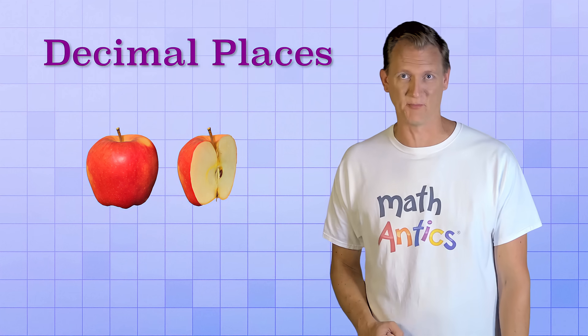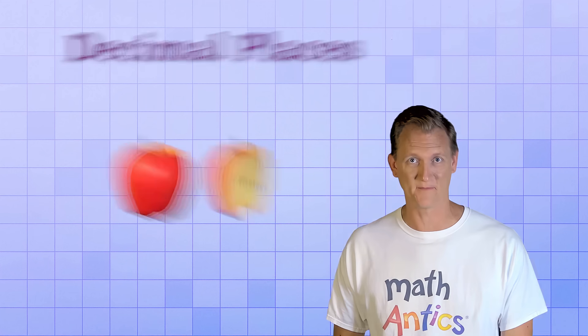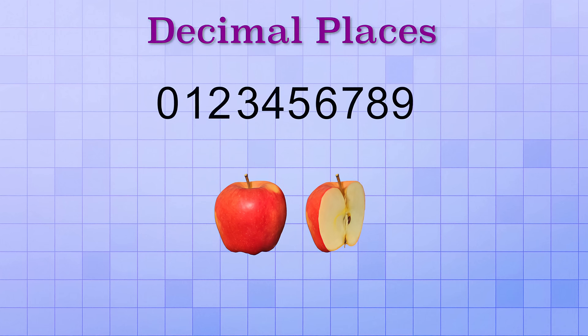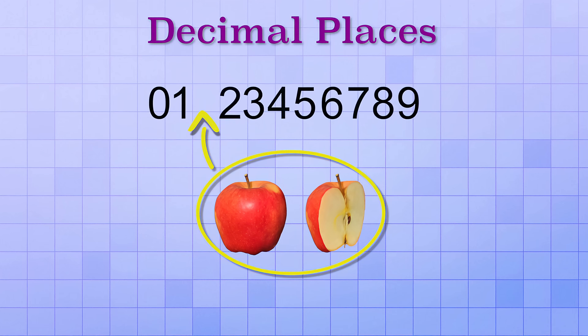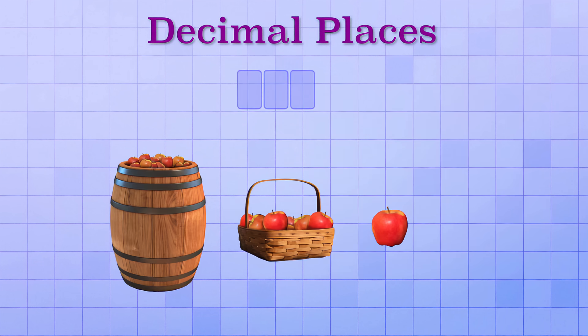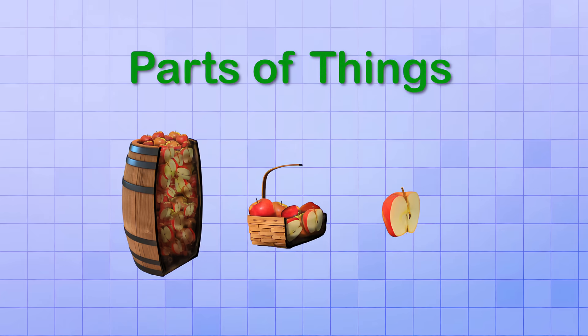The answer is decimal places. Decimal places are a way of extending the base 10 number system so that it can represent amounts that are in between whole amounts. Decimal places are just like regular number places, except that instead of using them to count groups, we use them to count parts or fractions of things.